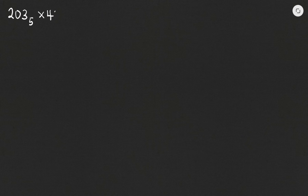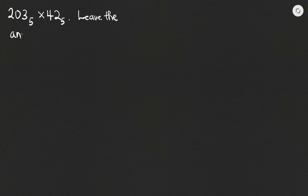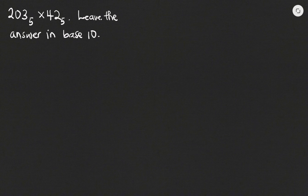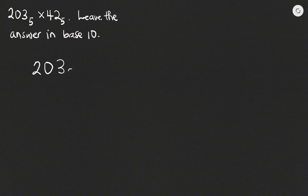In this example we have to simplify 203 base 5 multiplied by 42 base 5, and then leave the answer in base 10. So first we do the multiplication in base 5, and after we are done we convert the answer to base 10. We have 203 base 5 and 42 base 5.